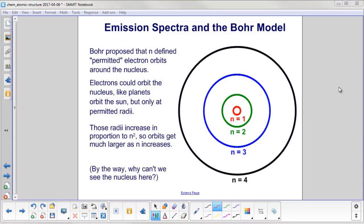Bohr then proposed that this pesky little n here, it defined permitted, notice it's in quotes, permitted electron orbits around the nucleus. So electrons could orbit the nucleus, just like the planets orbit the sun, but only at permitted radii.